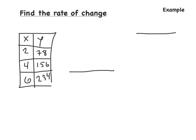Off to the left we have an x-y table. In the x's we have 2, 4, and 6. In the y's we have 78, 156, and 234. We are trying to find the rate of change. Remember, to find the rate of change, it is the change in y over the change in x.